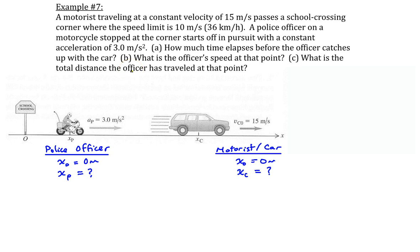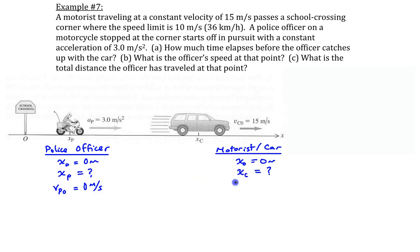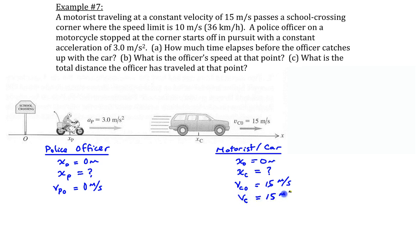For initial velocity: the motorcycle is stopped at the corner just as the car passes by at 15 meters per second, so the police officer's initial velocity is zero meters per second. The car is traveling at an initial velocity of 15 meters per second, which is the same as its final velocity since it continues at constant velocity throughout the problem. The final velocity of the police officer when he catches up is unknown — that's what we're asked to find in part B.